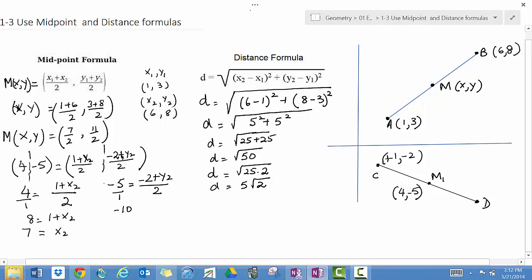Here, you get -10 equals -2 + y₂, so y₂ equals -8. So your point D has coordinates (7, -8). This is an endpoint.